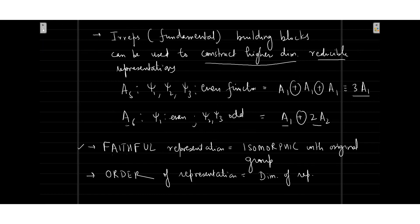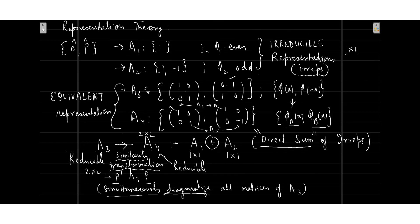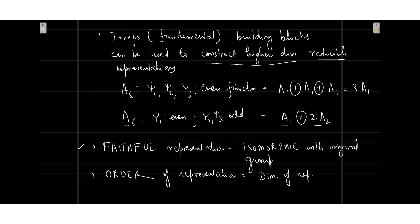I also mentioned that there exists what we call a faithful representation, which is an isomorphic representation with respect to the original group — distinct matrices represent distinct elements of the group. The order of the representation is the same as the dimension of the representation; for example, two-cross-two matrices have dimension two, which is also the order of the representation. I will pause here to let you ask questions, because this is a very powerful and important concept with several terms: irreducible representation, equivalent representation, reducible representation, direct sum of representations, simultaneous diagonalization, similarity transformation, and faithful representations.